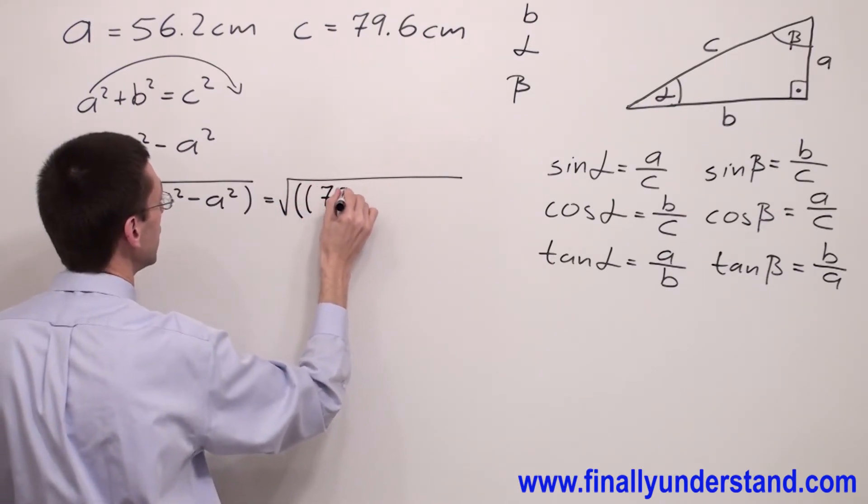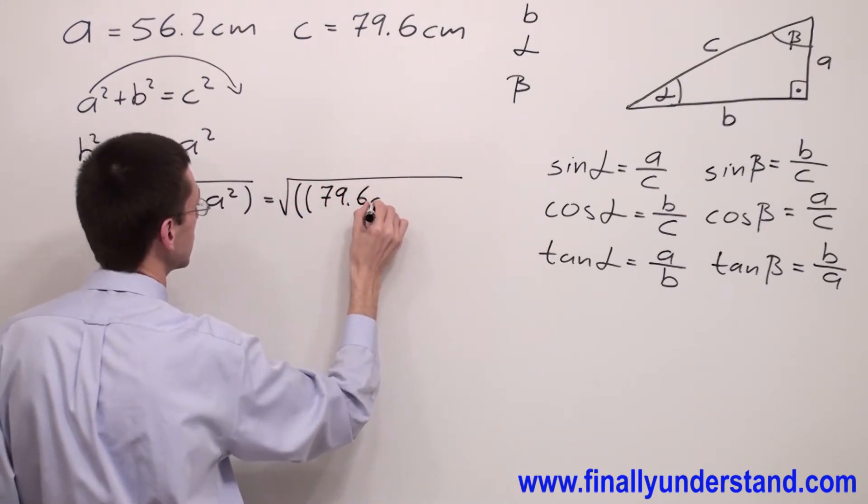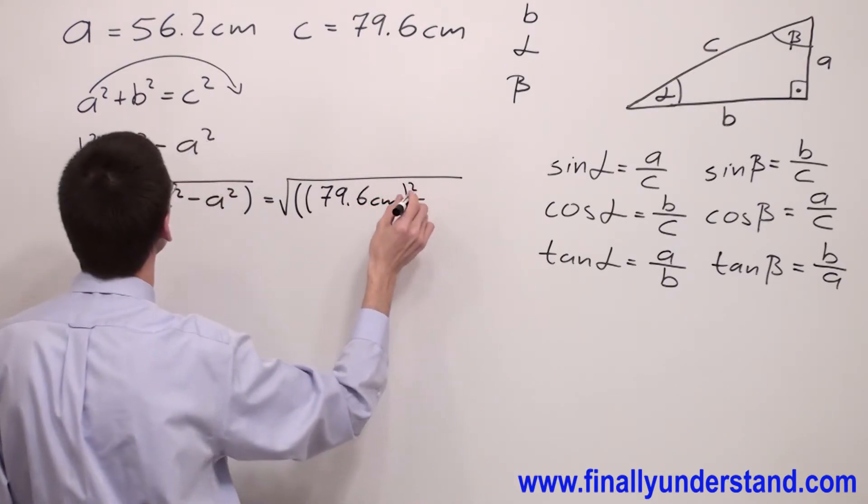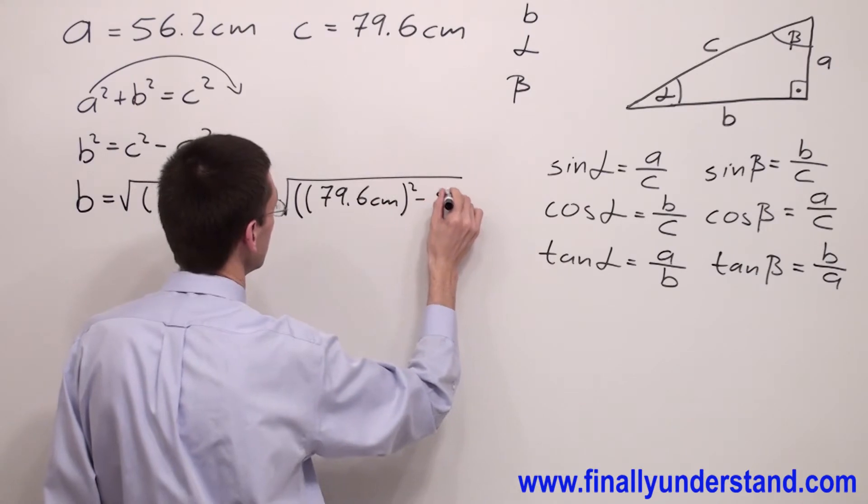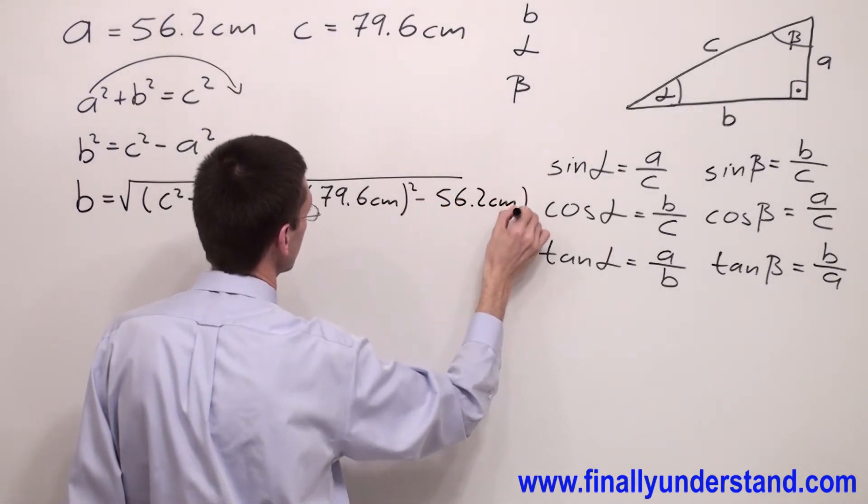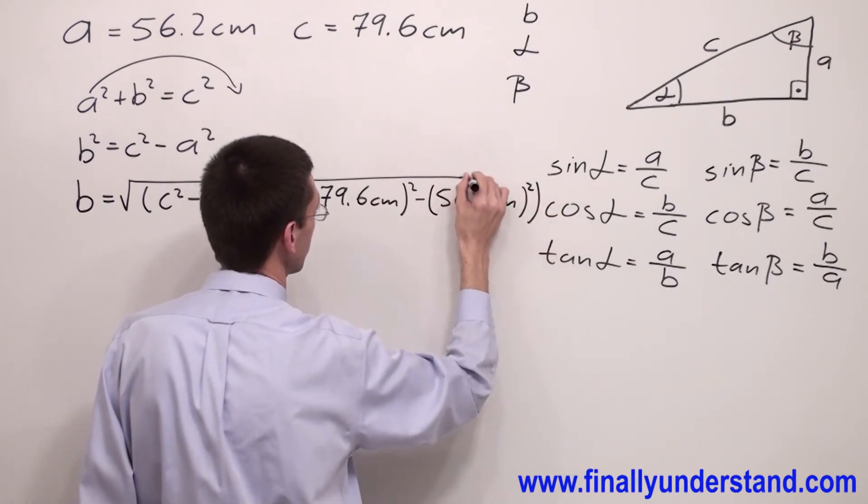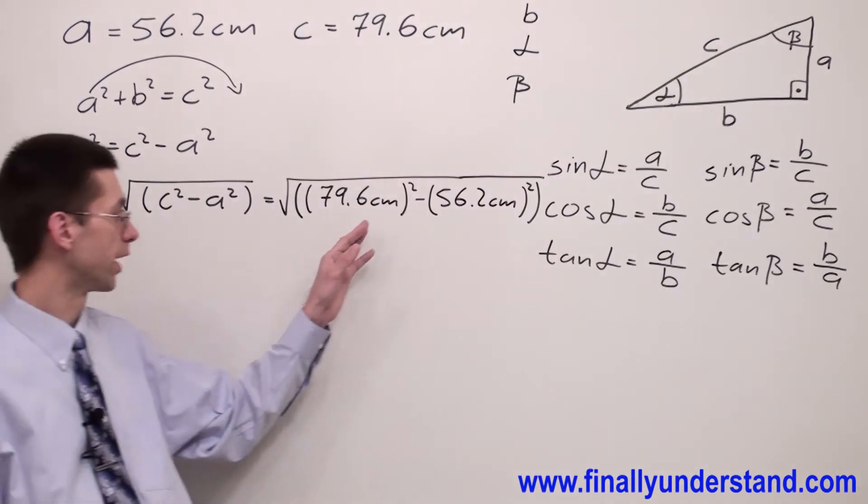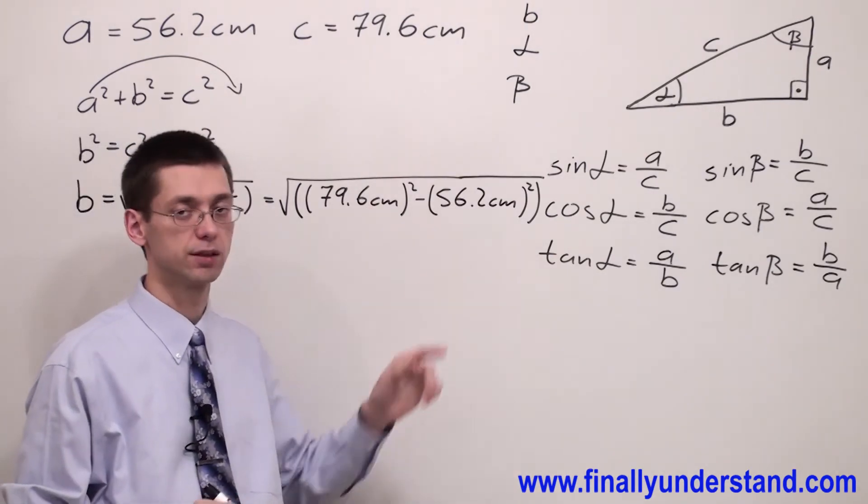This is equal to the square root, open parenthesis, and we have 79.6 centimeters to the second power minus 56.2 centimeters to the second power.